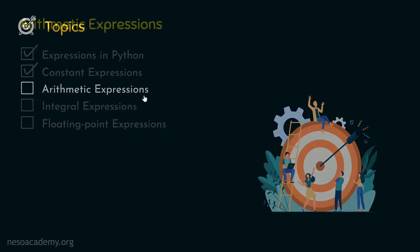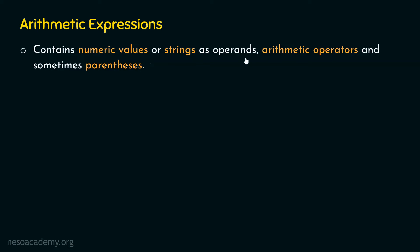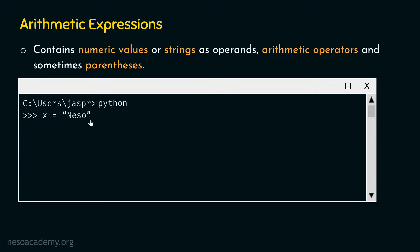Let's move on to arithmetic expressions. What is an arithmetic expression? An arithmetic expression contains numeric values or strings as operands, and it must have at least one arithmetic operator, or it can have more than one arithmetic operators, and sometimes parentheses. For example, let's type x equal to Nesso, then x into three. X into three is an arithmetic expression because the star, which is the multiplication operator, is an arithmetic operator, and the operands include the string Nesso and the numeric value three.